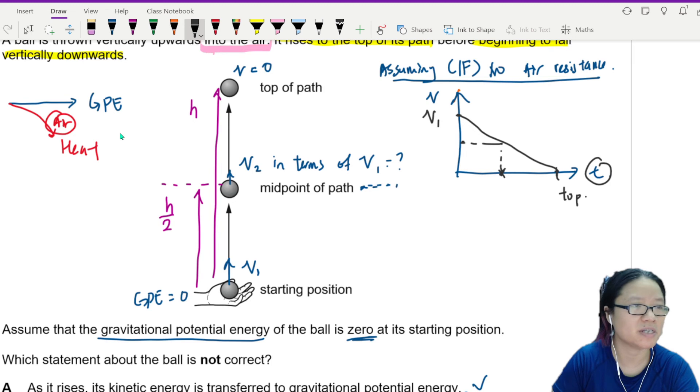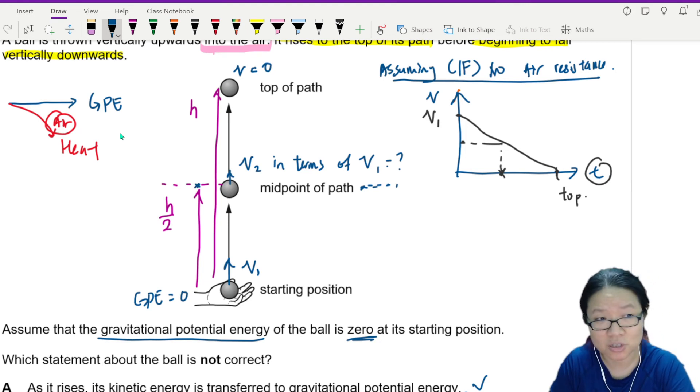So you can already conclude that B is out. But if you want to do further discovery, there are more videos based on how do you calculate what is this V2. You can use conservation of energy. You can also form simultaneous equations. There are too many unknowns.